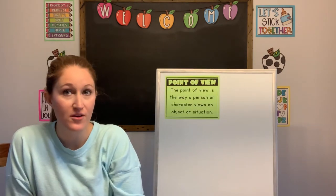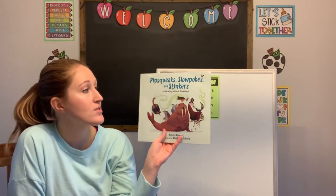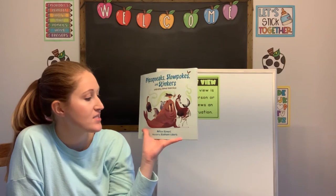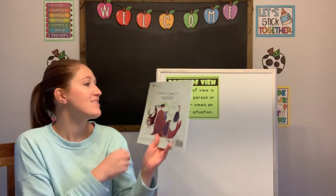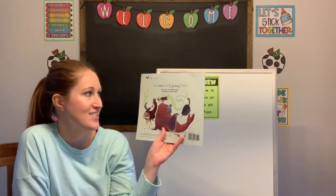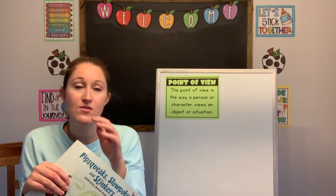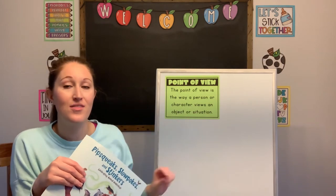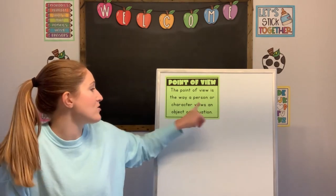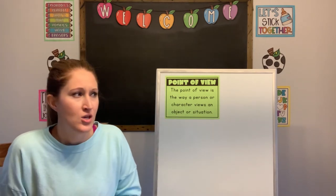So let's talk about our book for the day. The book we are going to read today is called Pipsqueaks, Slowpokes, and Stingers: Celebrating Animal Underdogs, by Melissa Stewart, illustrated by Stephanie Labras. The back says: punny, smelly, clumsy, shy — take a look at the surprising traits that help some animals survive. What we are going to try to do today is figure out the point of view that the author has about these animal underdogs — how does she view them?